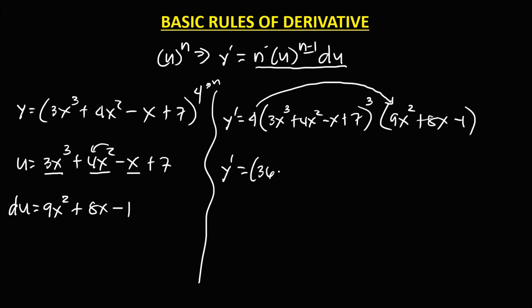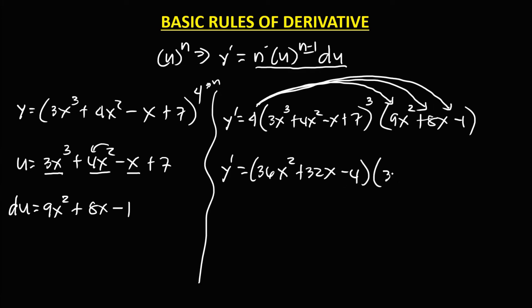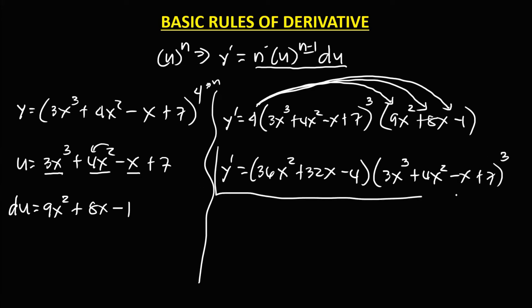Times du, which is 9x squared plus 8x minus 1. Simplifying by multiplying 4 through: 4 times 9 gives 36x squared, 4 times 8 gives 32x, and 4 times negative 1 gives negative 4, times 3x cubed plus 4x squared minus x plus 7 to the power 3. This is the derivative.